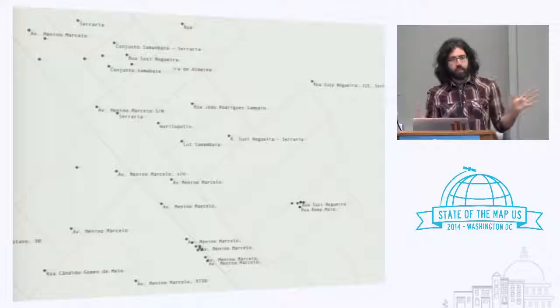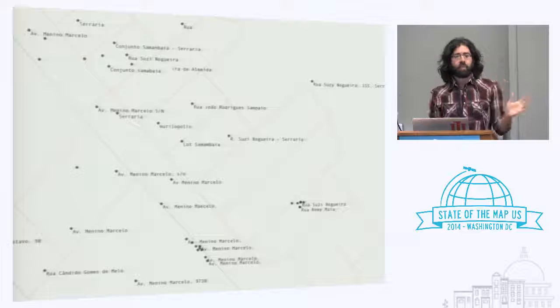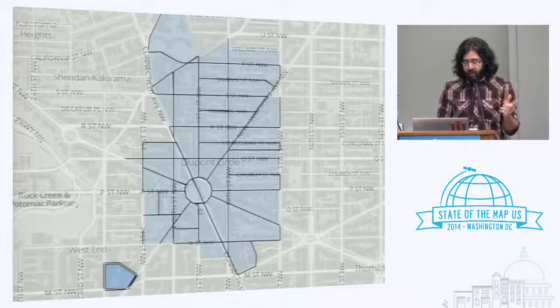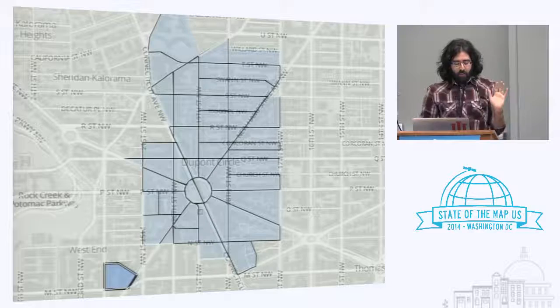So street labeling — we thought about it. We're trying really hard to figure out what we can do with Foursquare data on OSM. It didn't work. Next idea.